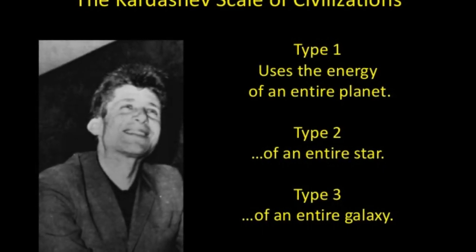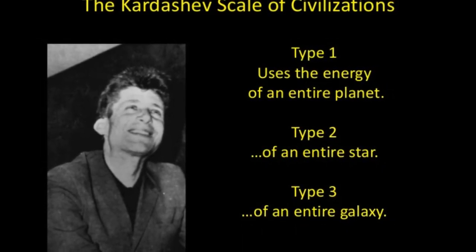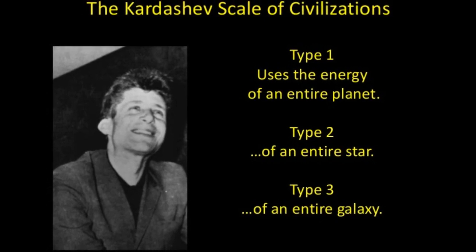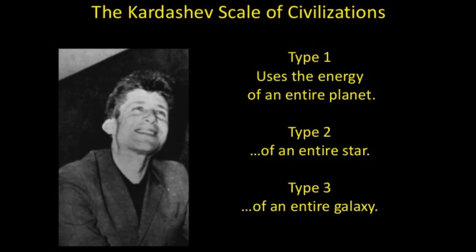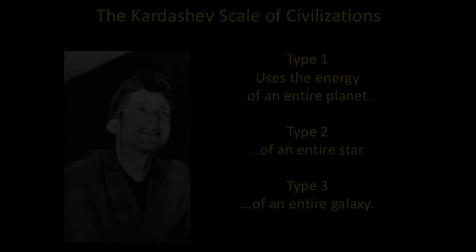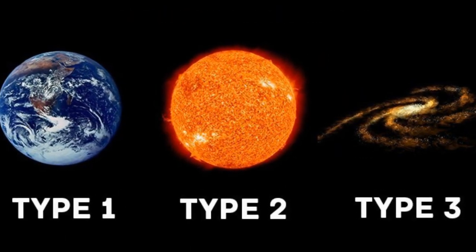Kardashev designed a hypothetical scale regarding energy consumption on a cosmic scale for civilizations. This scale has three base classes: Type 1, Type 2, and Type 3.